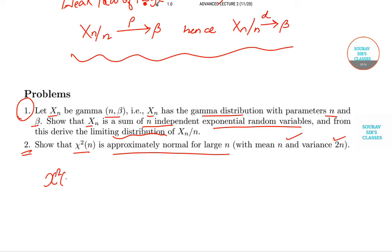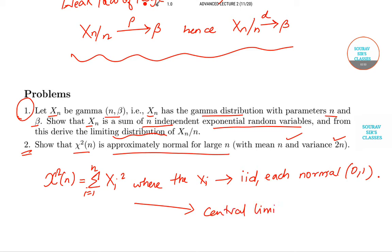Now chi square n is equal to summation XI square where I runs from 1 to n, where the XI are independently identically distributed and each normal with parameters 0 and 1. So thus central limit theorem applies.